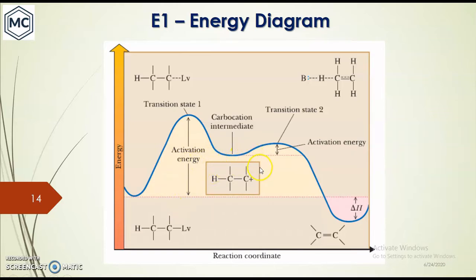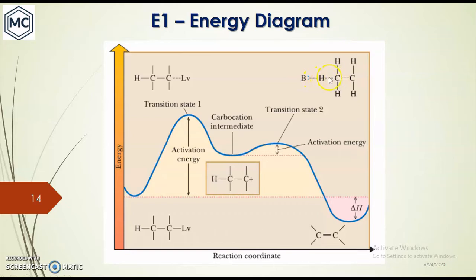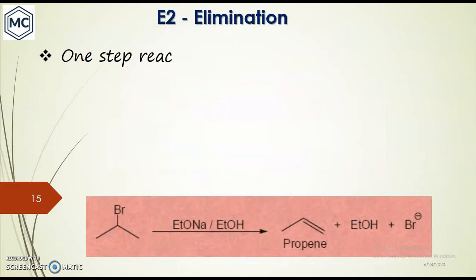The energy profile diagram of E1 elimination shows the starting material, an intermediate carbocation, and the product. There are two transition states: the first transition state has higher energy and the second has lesser energy. In transition state one, the bond between carbon and leaving group has started to break. In transition state two, the base has started to form a bond with hydrogen, the C–H bond is breaking, and the double bond is starting to form, which is why it has lower energy.